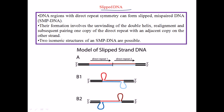Let us look at the structure in this picture. We have the 5 prime to 3 prime strand and the 3 prime to 5 prime strand. We have direct repeat region one and direct repeat region two, and again we have the complementary direct repeats one and two.